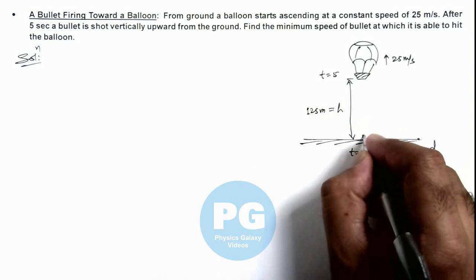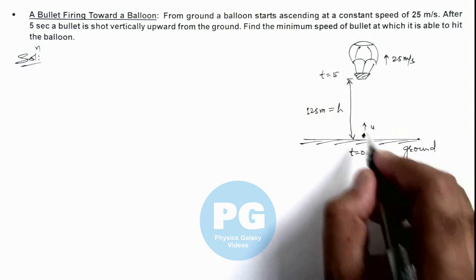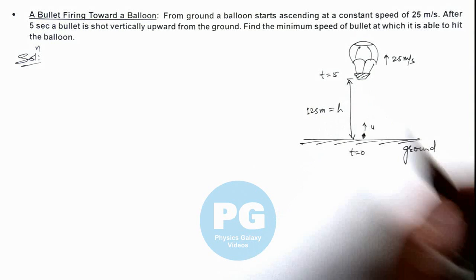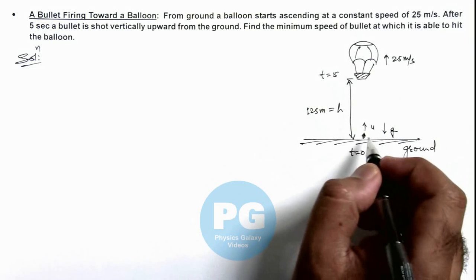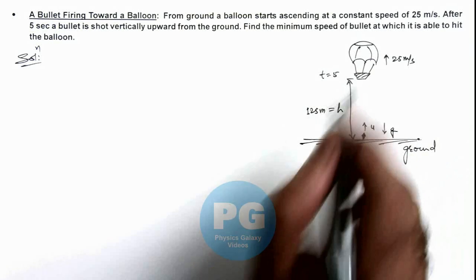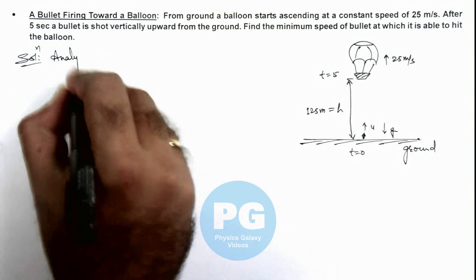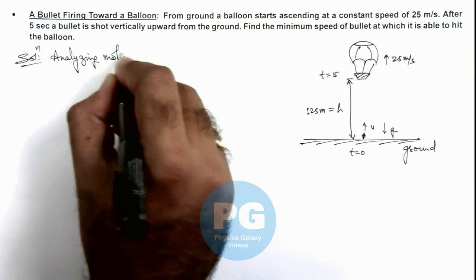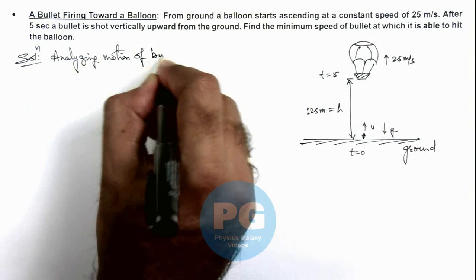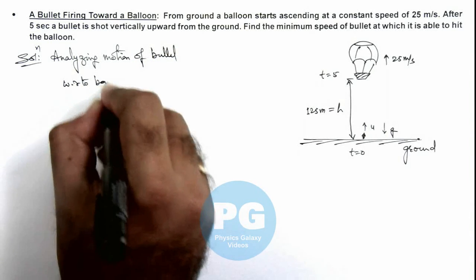From the bottom a bullet is fired up at a speed u, and u is such that it should hit the balloon. Here it is retarded by g. In this situation we can analyze the motion of bullet with respect to balloon.